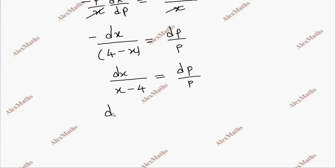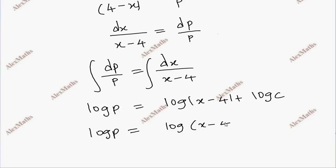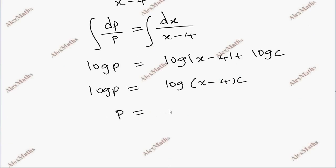Integrating both sides, we get log p equals log (x minus 4) plus log c. Therefore, p equals c times (x minus 4).